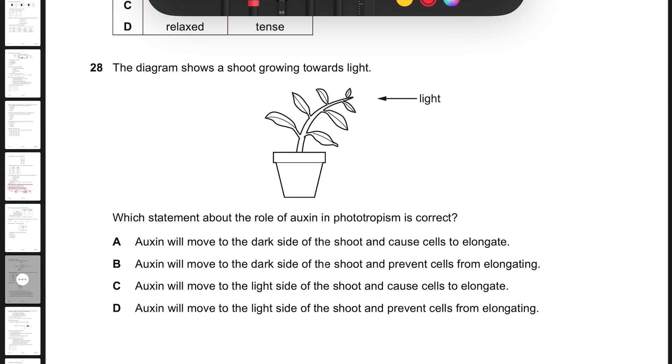The diagram shows a shoot growing towards the light. Which statement about the role of auxin in tropism is correct? In this case, it's phototropism.